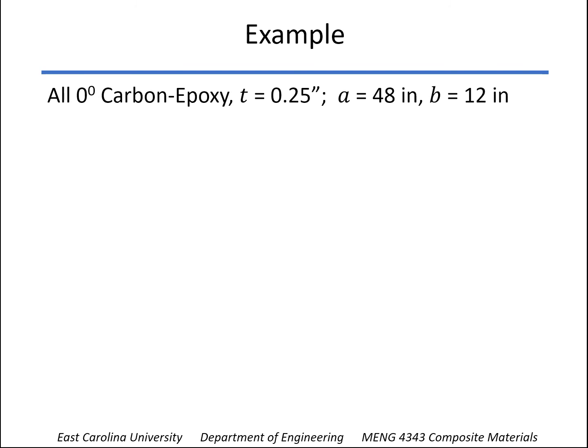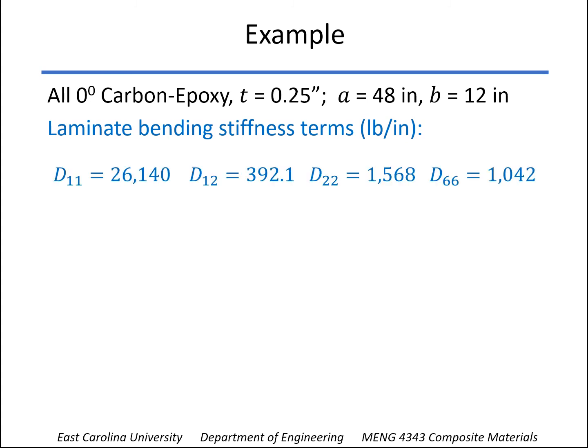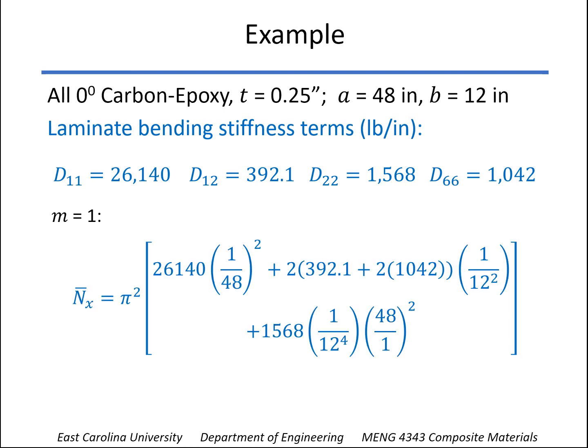So here's our example. We're going to use a quarter inch carbon epoxy. All the fibers are in the zero direction. The length of it is 4 feet, and the width of it is 1 foot 12 inches. So we can use our general laminate spreadsheet to find the bending stiffness terms, which are all in pounds per inch, as shown here. And now we can plug that into the equation we have, and we start out by trying M equals 1. So 1, wherever you have M, we put in here D11, D12, D66, and D22, and our answer comes out to be 2,170 pounds per inch.